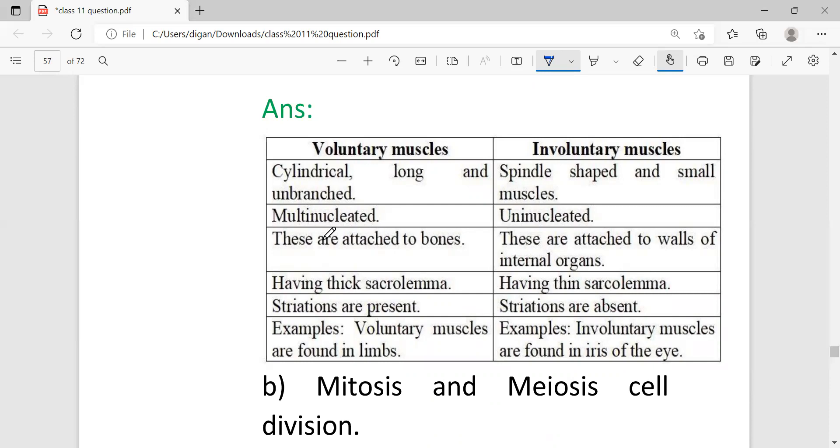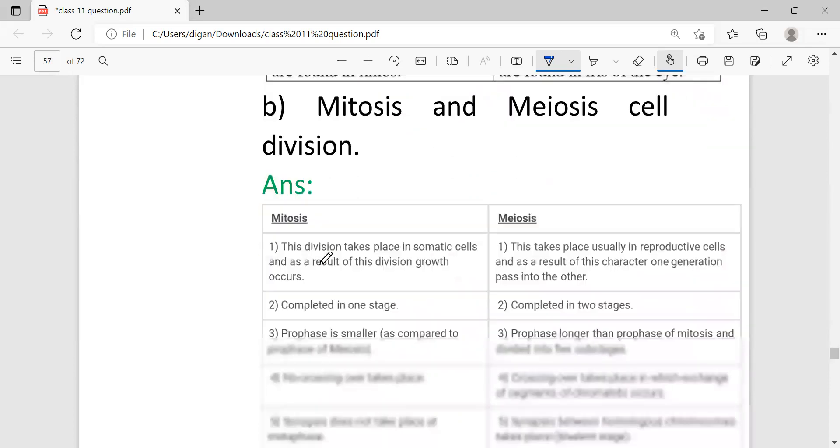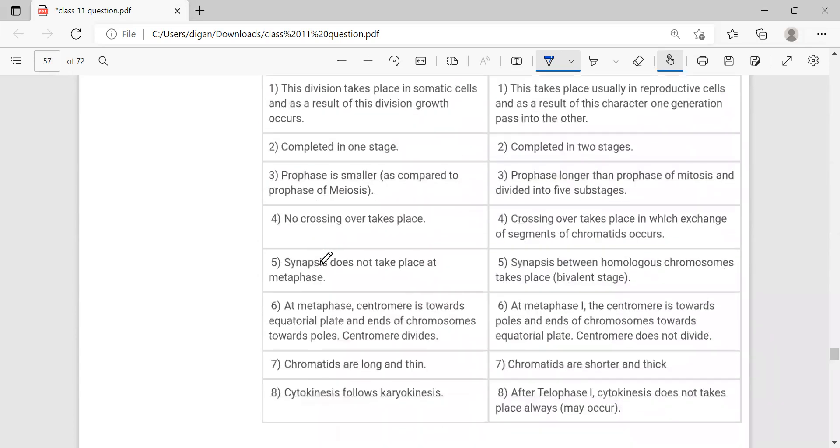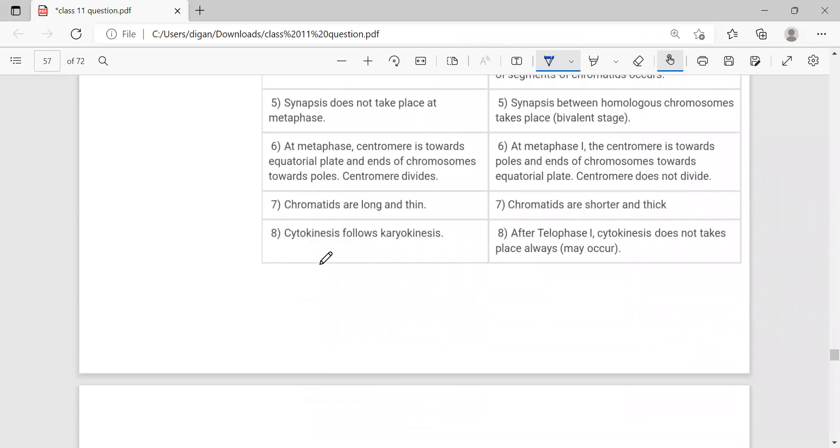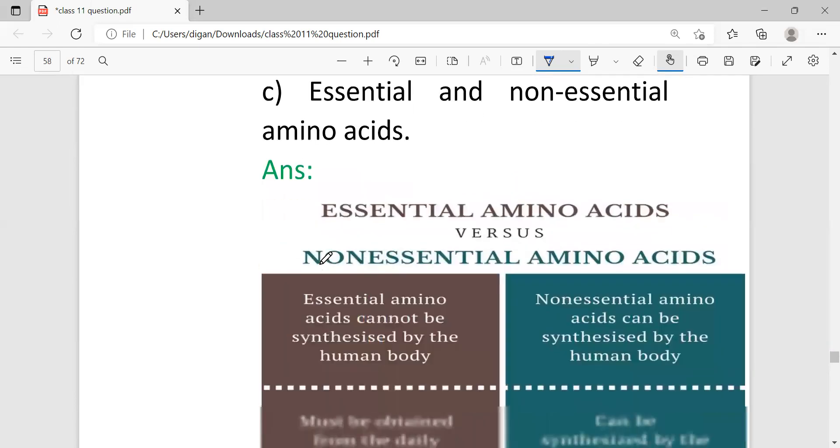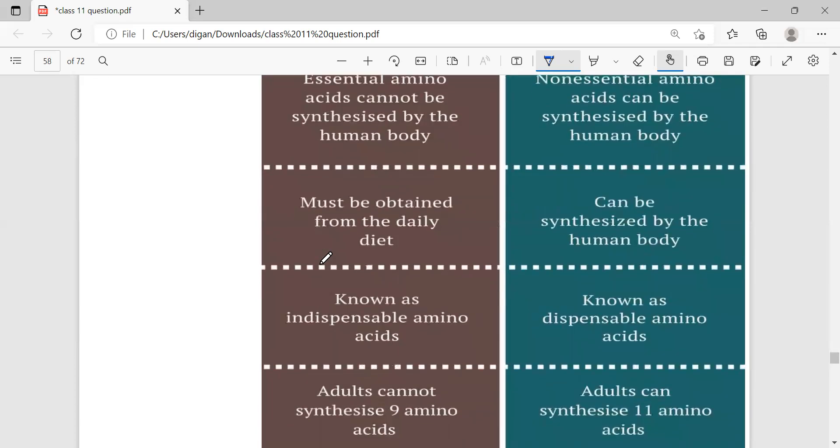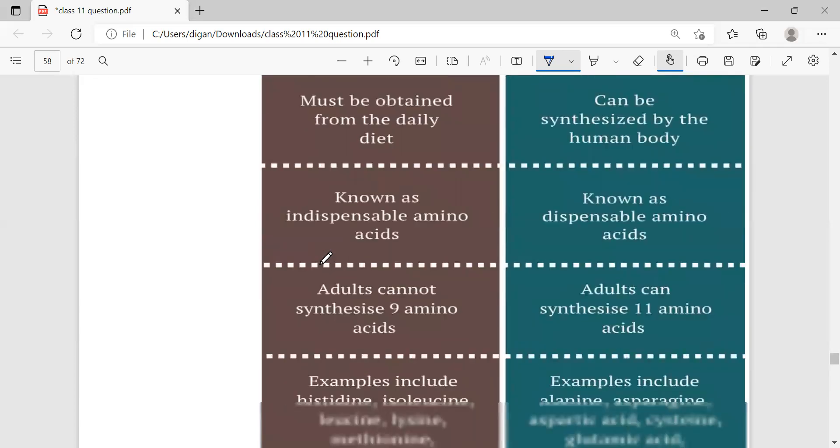Next: mitosis versus meiosis cell division. These are the differences between mitosis and meiosis cell division. Next question is essential and non-essential amino acids. These are the differences between essential and non-essential amino acids.